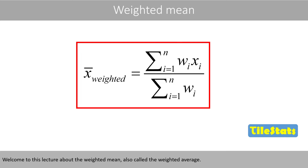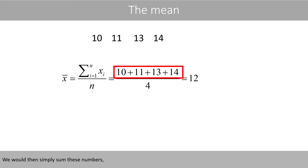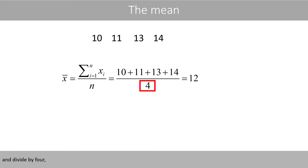Welcome to this lecture about the weighted mean, also called the weighted average. Suppose that we like to calculate the mean of these four numbers. We would simply sum the four numbers and divide by 4, which gives a mean value of 12.